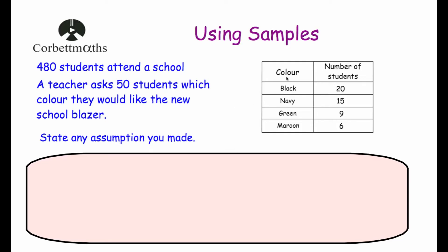Our first assumption is that the sample has to be representative of the whole school. For instance, with the students that liked a navy blazer, there were 15 of them — 15 out of 50, which is three-tenths. If the fraction for the whole school wasn't three-tenths, there would be a different answer. So we're making an assumption that three-tenths of the entire school would like a navy blazer based on just these 50 answers. Another assumption is that the teacher chose these 50 students randomly, not just all 50 year 9 students, but a selection chosen randomly across the whole school.